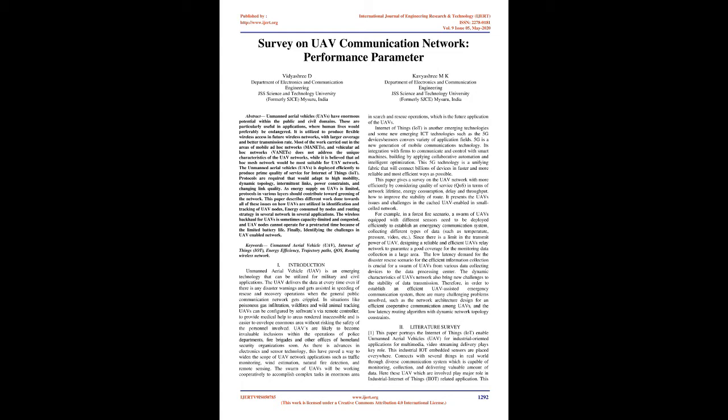UAVs are deployed efficiently to produce prime quality of service for Internet of Things (IoT). Protocols are required that adapt to high mobility, dynamic topology, intermittent links, power constraints, and changing link quality. As energy supply on UAVs is limited, protocols in various layers should contribute toward greening of the network. This paper describes work done on UAV node identification and tracking, energy consumption, and routing strategies. The wireless backhaul for UAVs is sometimes capacity-limited and congested, and UAV nodes cannot operate for a protracted time due to limited battery life. Finally, it identifies challenges in UAV-enabled networks.